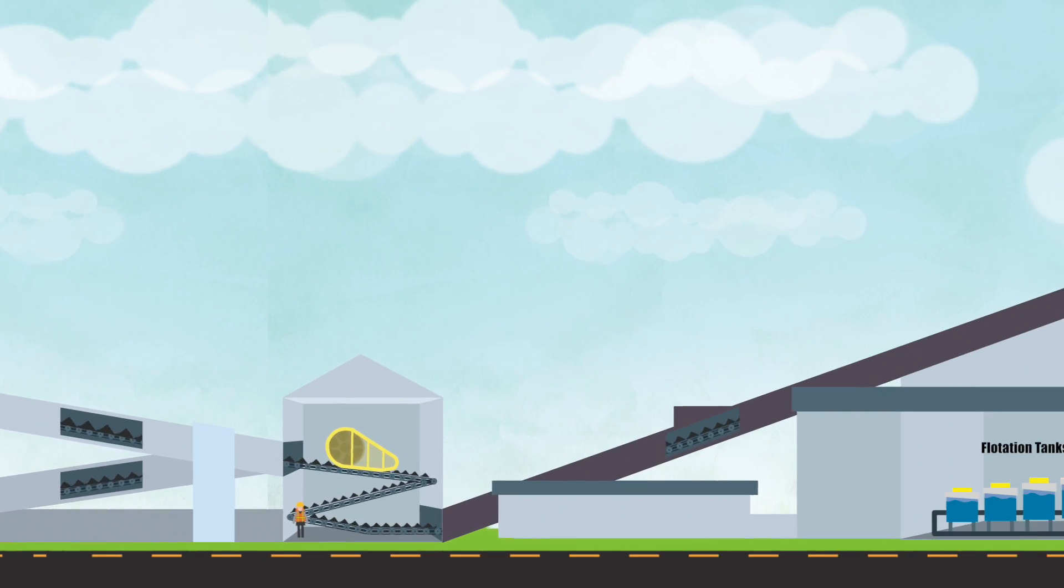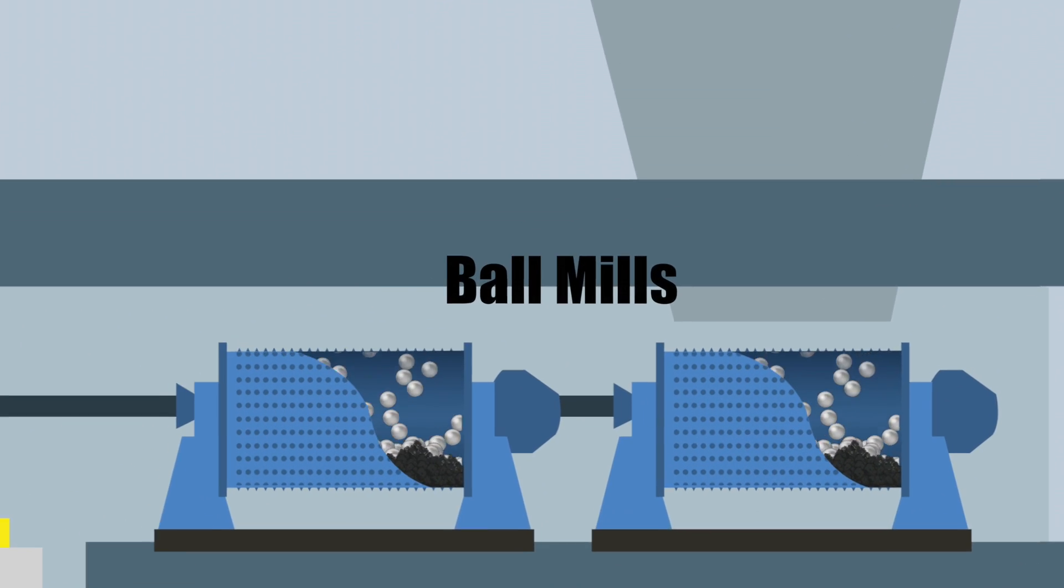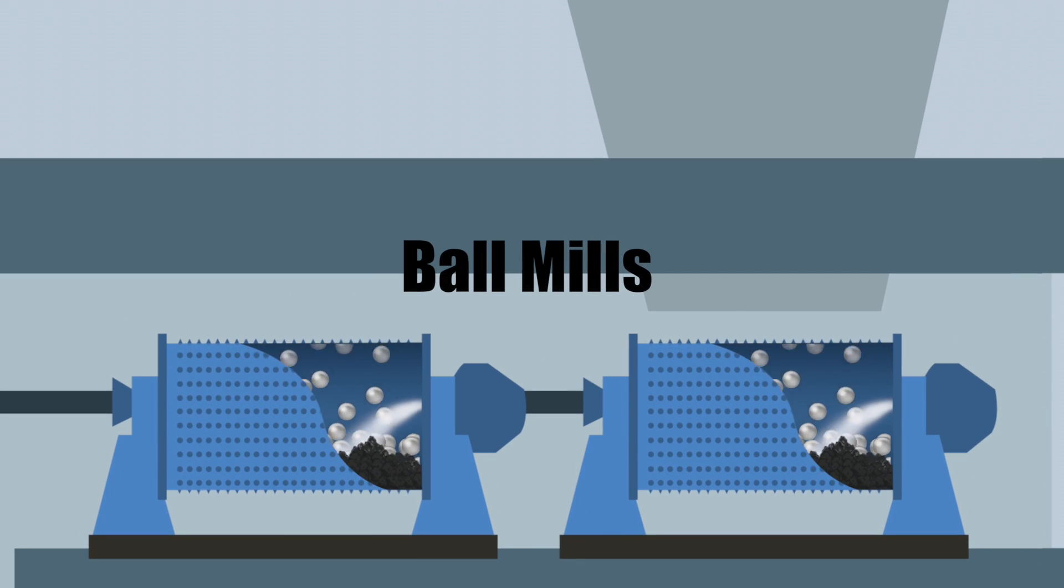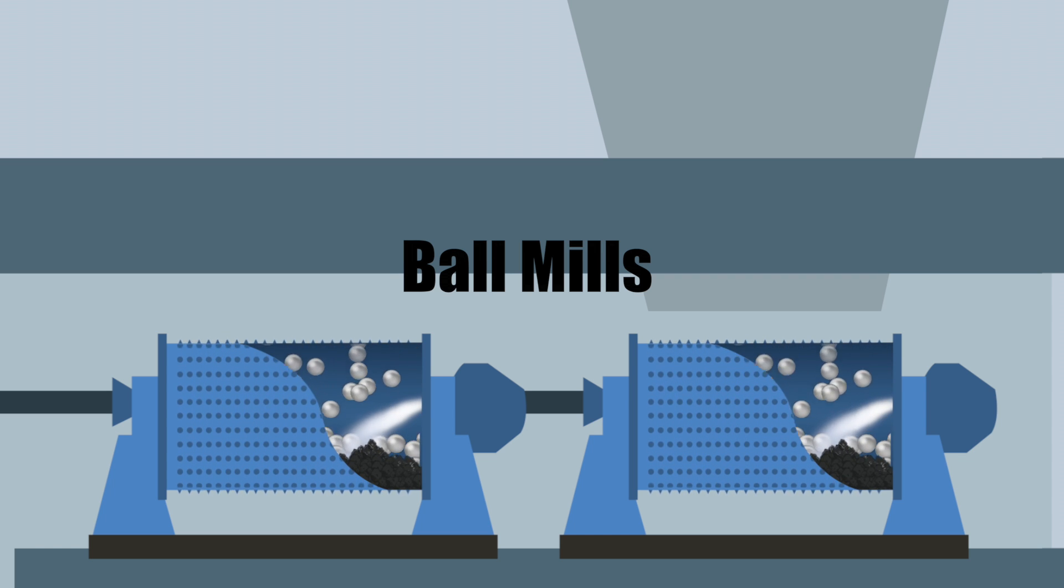Next, the ground-up ore heads to the ball mills which contain three-inch or baseball-sized chrome balls that grind the ore down to the size of beach sand. At this point, water is added and both the nickel and copper are now a slushy semi-liquid blend called slurry.